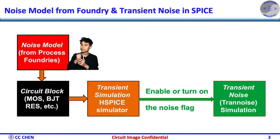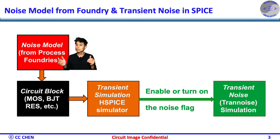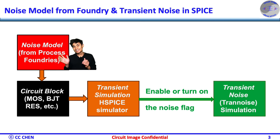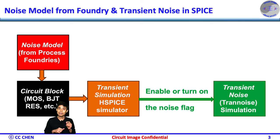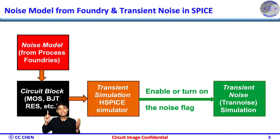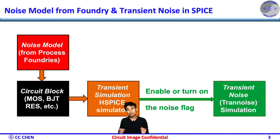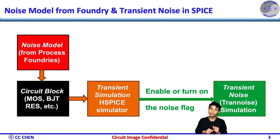Fortunately, all the process foundries should provide the noise model for the circuit designer according to their device characterization data. In your transient noise simulation, you must add the noise model from the foundries into all the devices and resistors in your circuit block, such that the noise can be calculated properly. But to speed up the simulation time, the transient noise option is disabled by default, and you must modify the noise flag to enable it while running the transient simulation.